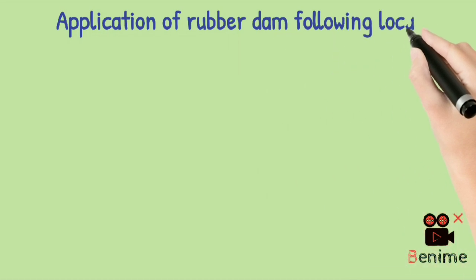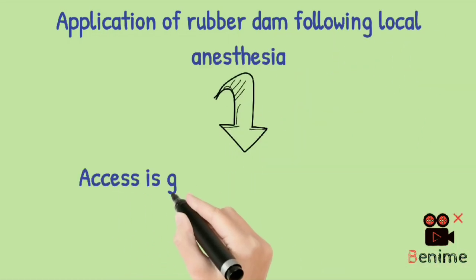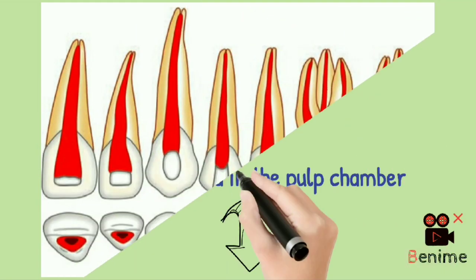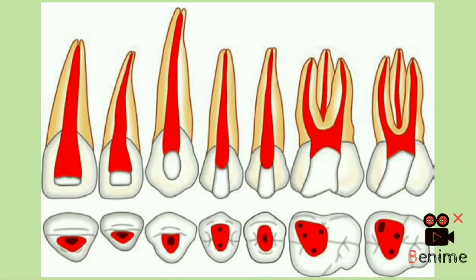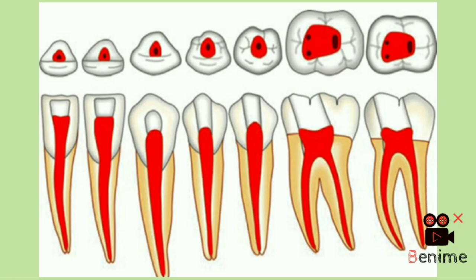First anesthetize the tooth with LA and apply rubber dam properly. Then gain a straight line access to the pulp chamber. Here I attach some pictures of access cavity preparation shapes. Take a screenshot if you want. For anterior to canine, it is triangular in shape, and in premolars it is ovoid or oval. For molars, it is triangular or trapezoid in shape.